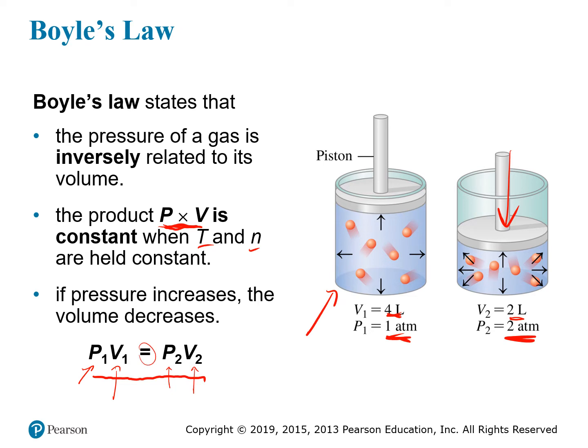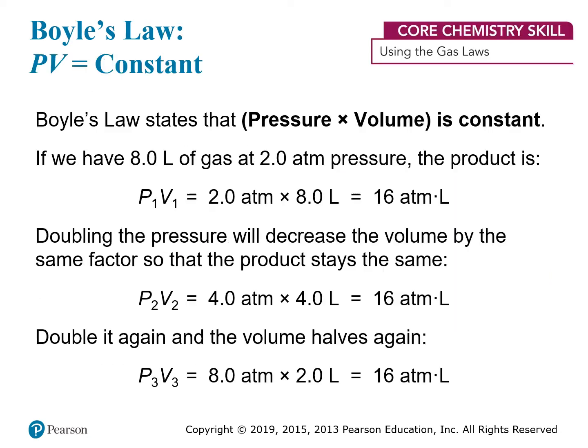So P1 V1 equals P2 V2 — that's the mathematical statement of Boyle's Law. Let's look at an example that should illustrate what we mean when we say that the pressure times the volume is a constant.